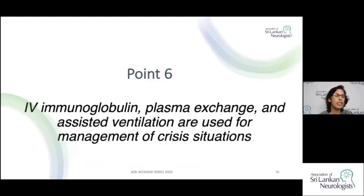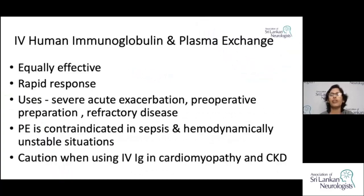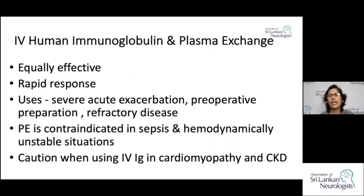IVIG and plasma exchange are used for management of crisis situations. Both are equally effective, providing rapid response, and are indicated in severe acute exacerbations, preoperative preparation, or refractory disease. The choice between them depends on patient factors, cost, availability, and location.